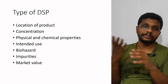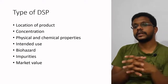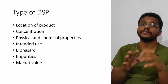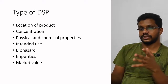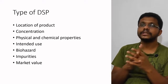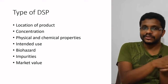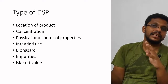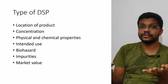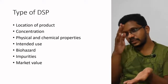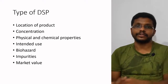Biohazard of the product is another consideration — if the product is biohazardous, the strategy should be designed so it won't be harmful to anyone. Impurities are also a factor; if fermentation leads to by-products or impurities, separation becomes more difficult. Finally, market value affects the whole downstream processing approach — if the market value is low, we cannot invest much, so we use only basic equipment and techniques to reduce cost.